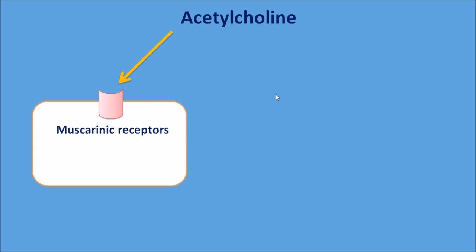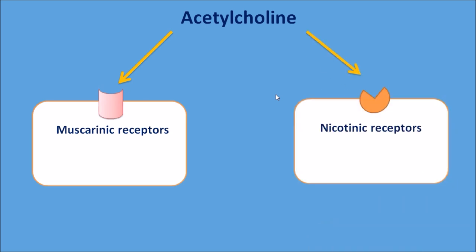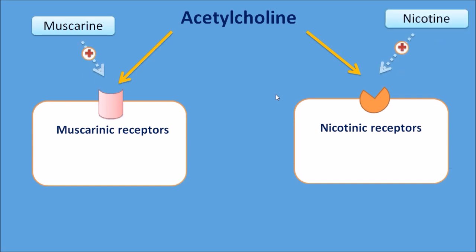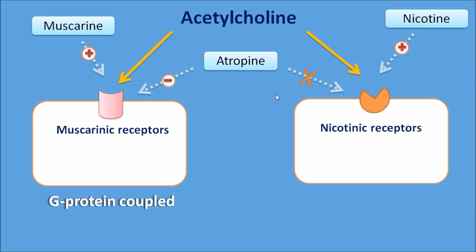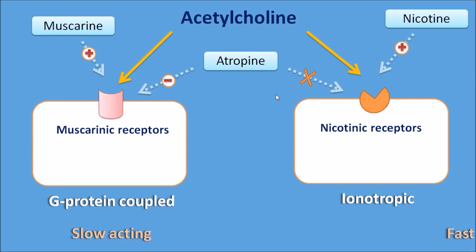Acetylcholine acts on two receptors: muscarinic receptors and nicotinic receptors. Muscarinic receptors are stimulated by muscarine and nicotinic receptors are stimulated by nicotine. Atropine is a selective blocker of muscarinic receptors but has no action on nicotinic receptors. Muscarinic receptors are G protein-coupled receptors, whereas nicotinic receptors are ionotropic receptors. G protein-coupled receptors are slow acting and ionotropic receptors are fast acting, so acetylcholine can produce slow actions through G protein-coupled receptors and fast actions through ionotropic receptors.